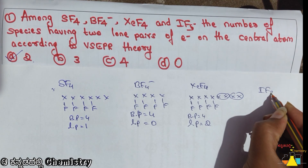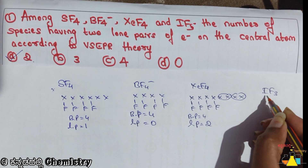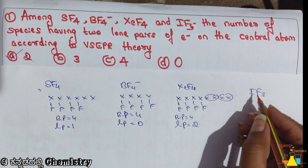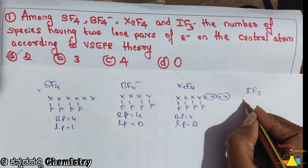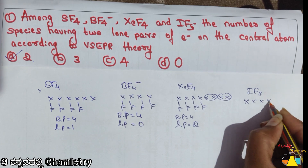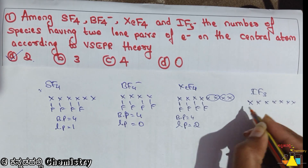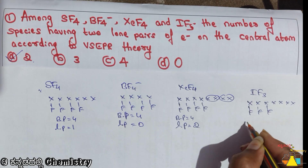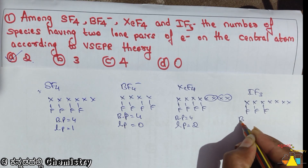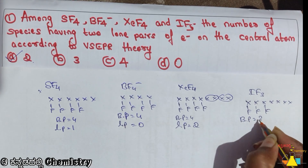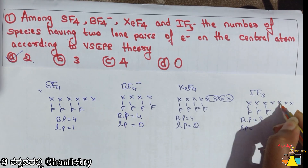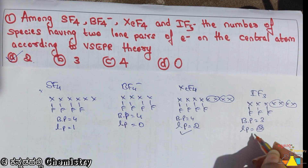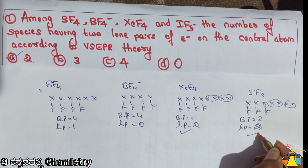Next, IF3 is 9. So IF3 — if the total is less electrons: 1, 2, 3, 4, 5, 6, 7. S2 is 3: 1, 2, 3. All the bond pairs is equal to 3. And lone pairs, which is equal to 1, 2. So 2. This is the right answer.